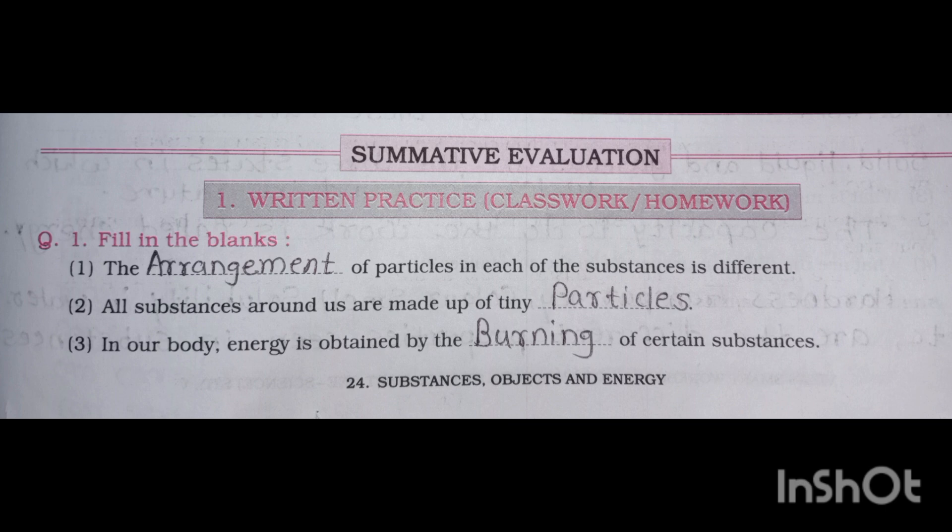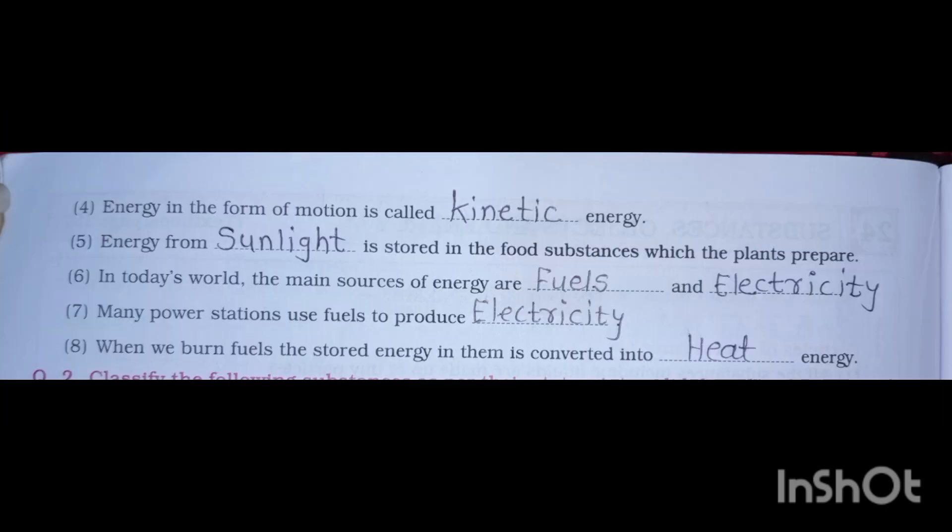Second one: all the substances around us are made up of tiny particles. Third one: in our body, energy is obtained by the burning of certain substances. Fourth one: energy in the form of motion is called kinetic energy.